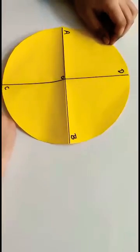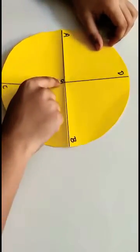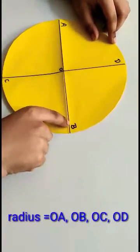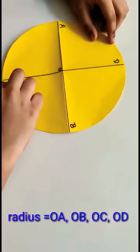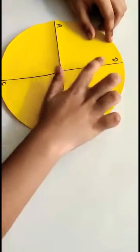Now, I will show you radius of the circle. OA is a radius. OB is a radius. OC is a radius. OD is also a radius.